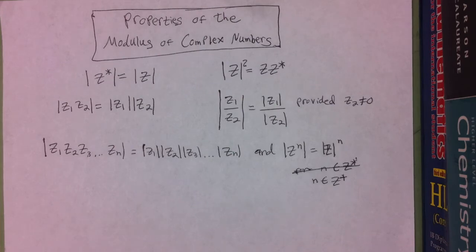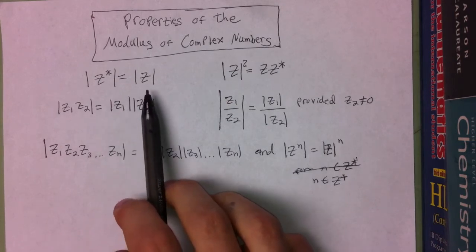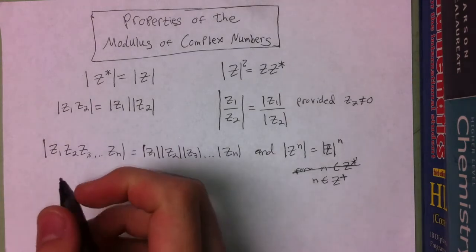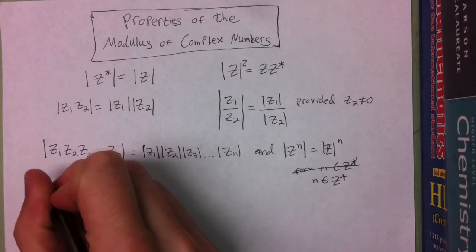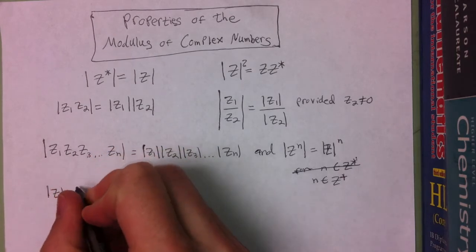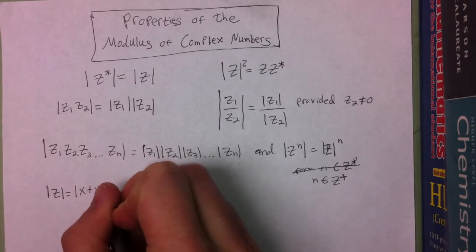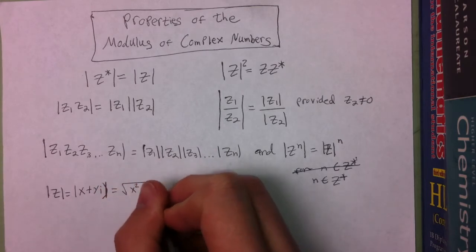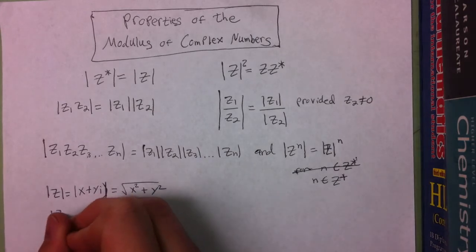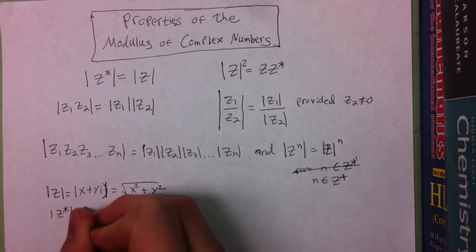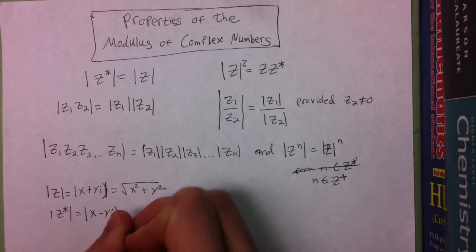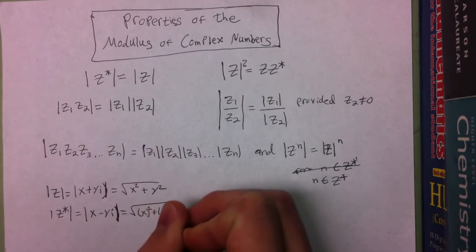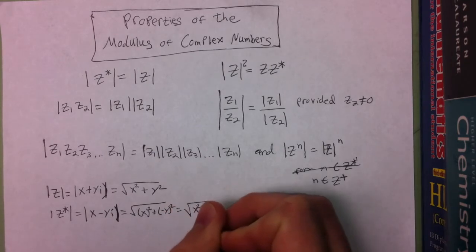First of all, we need to know that if you take the modulus of a complex number, that's going to be the same as the modulus of its conjugate. To prove that, we can say the modulus of z equals the modulus of x plus yi, which is equal to the square root of x squared plus y squared. And then the modulus of z conjugate is equal to the modulus of x minus yi, which is equal to the square root of x squared plus negative y squared, which is equal to the square root of x squared plus y squared.